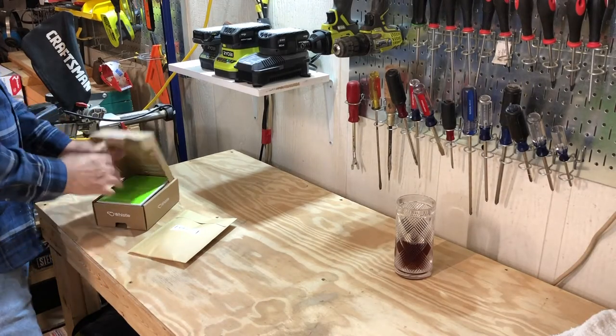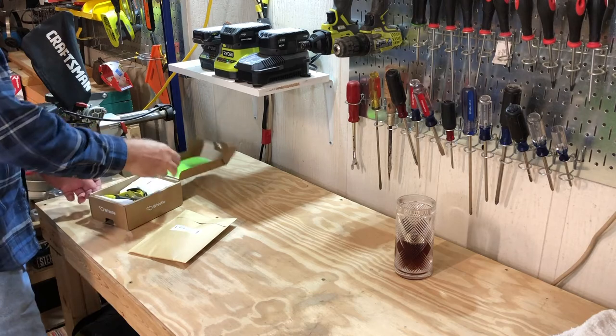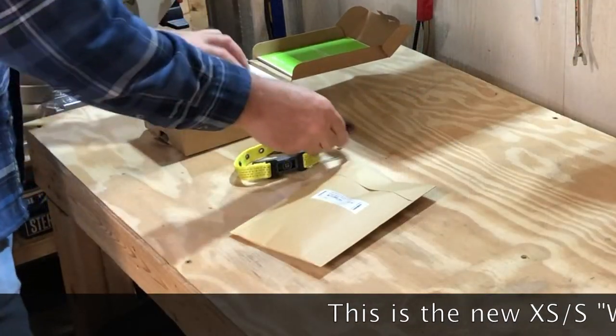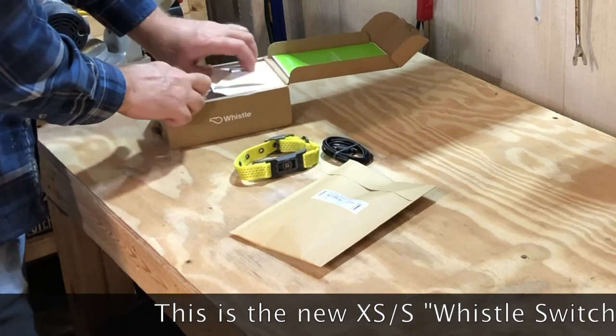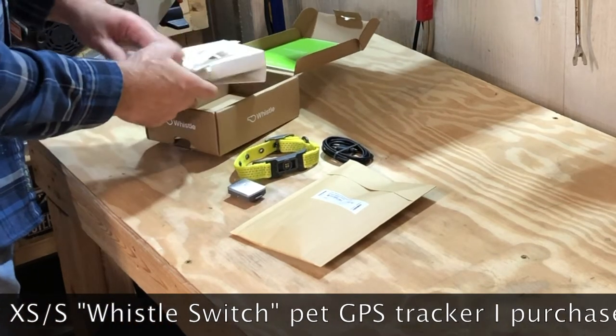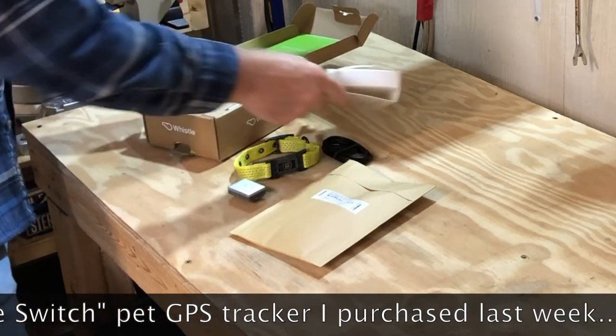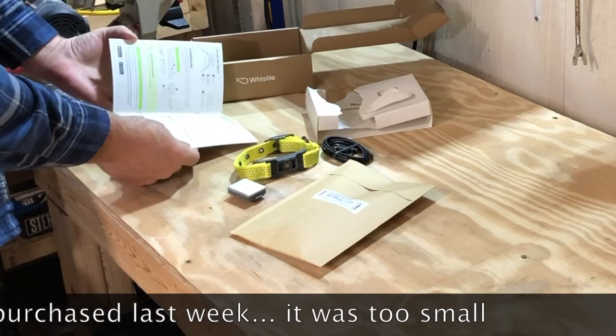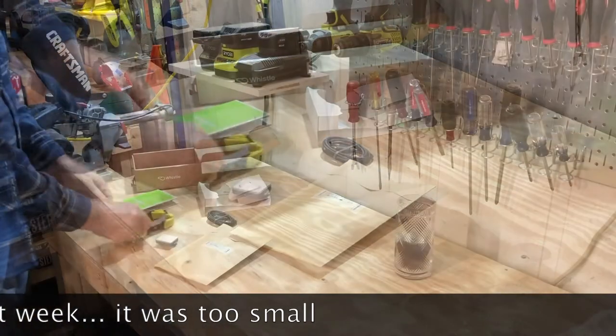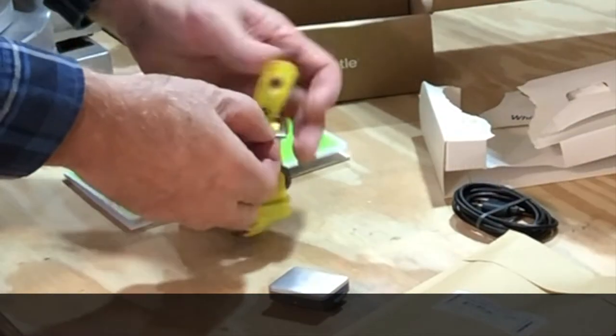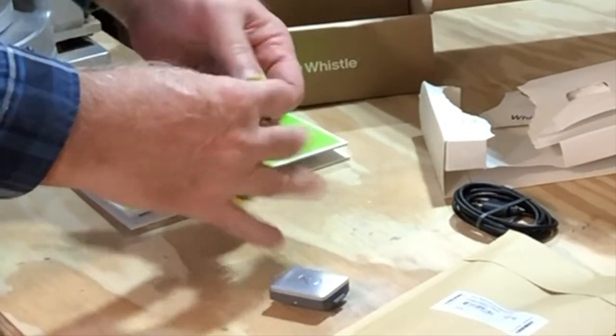Hello everyone, this is a Whistle GPS pet tracker. This is the new model they have called the Whistle Switch. I had one of these Whistle GPS trackers for a few years now, but apparently AT&T is discontinuing their 3G coverage and I had to upgrade it. So this is the latest and greatest. I ordered this for my 12 pound dog.